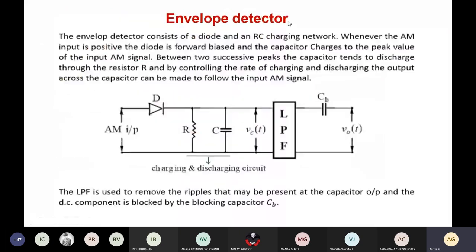We are going to use an envelope detector as part of AM detection. Here we have a diode, and the AM input is given to the diode. The output of this diode is given to an RC network, and this output is again passed to a low pass filter. Then we have one more capacitor for blocking the DC values of the signal.